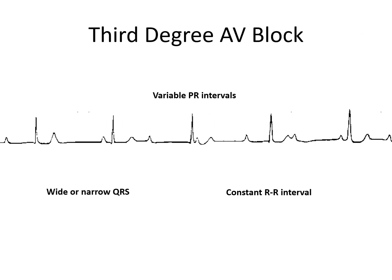Third degree atrioventricular block: variable PR interval, wide or narrow QRS complexes, but RR intervals are constant.